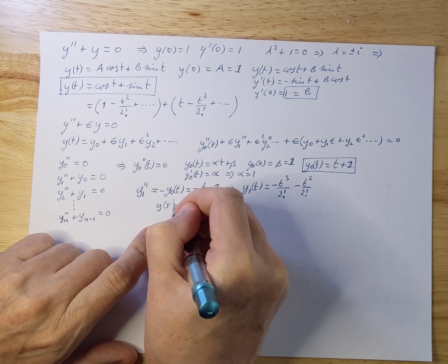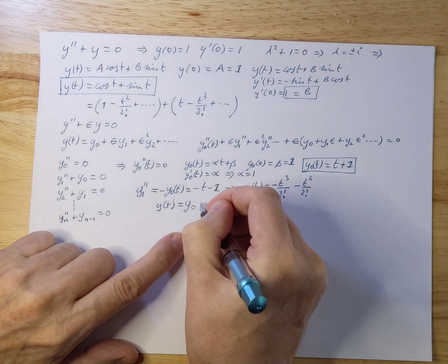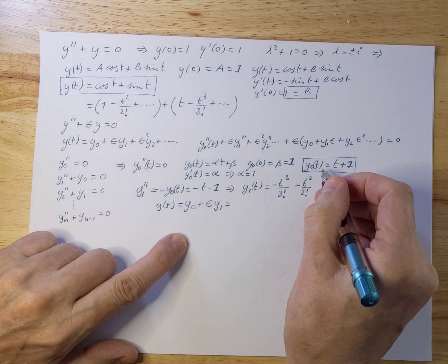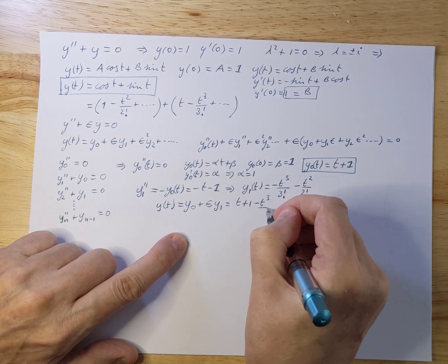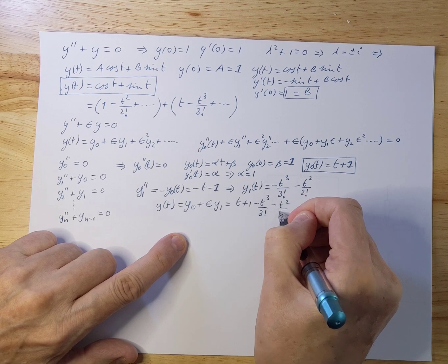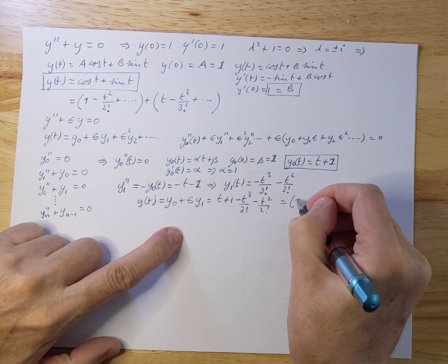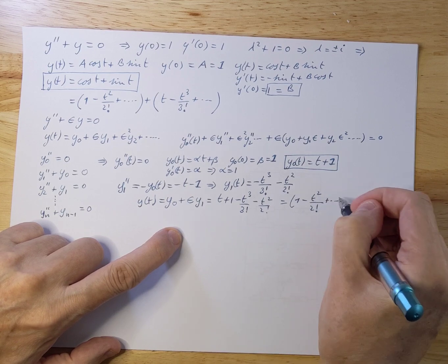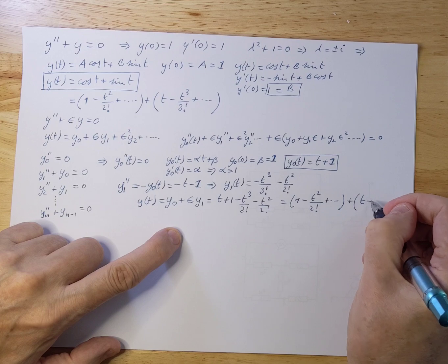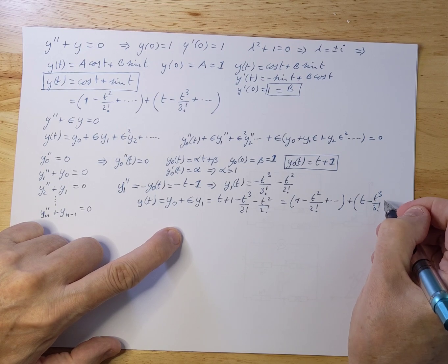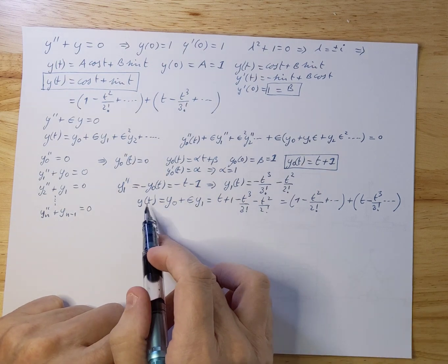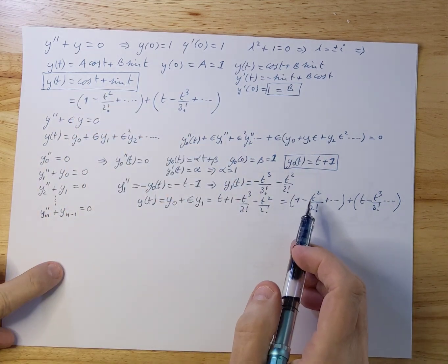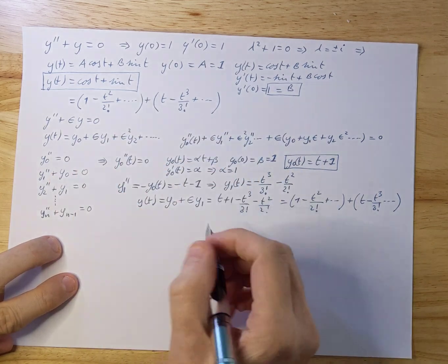And now the next result is y(t). So let's calculate y(t), which is at this point y₀ plus epsilon y₁, where epsilon equals 1. Now you fill that out. You get t plus 1 minus t³ over 3 factorial minus t² over 2 factorial. And we can slightly rewrite that into 1 minus t² over 2 factorial, plus more terms we don't know them yet, plus t minus t³ over 3 factorial. So now you can see that y(t) is a little bit more accurate. We have the first two terms of the cosine as well as the sine determined right now. And we can go one step further.